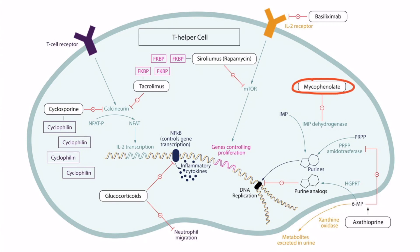This drug works by inhibiting the enzyme IMP dehydrogenase. This enzyme normally converts IMP — inosine monophosphate — into a functional purine. Purines include adenine and guanine, and those purines can then be used in DNA replication. If IMP dehydrogenase is inhibited, then mycophenolate has effectively inhibited replication of T helper cells, which is how mycophenolate suppresses the immune response.